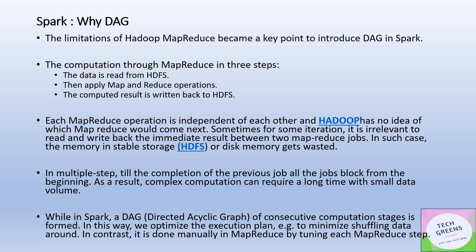The important question is: why do we need DAG and what is the design principle behind it? This primarily arises from the limitations of the Hadoop MapReduce world. In MapReduce, any computation is performed in three steps: read data from HDFS, perform map and reduce operations, then write the result back to HDFS. Each MapReduce operation is independent of the others — it has no idea what other MapReduce jobs are doing, making global optimizations very difficult.